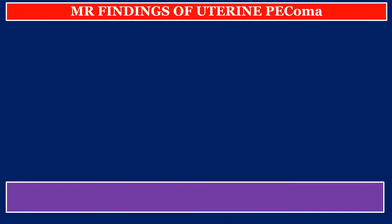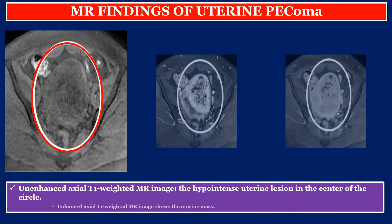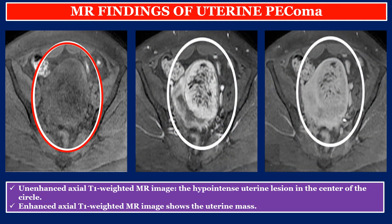MRI findings of uterine PEComa. This photo shows an enhanced axial T1-weighted MR image with a hypo-intense uterine lesion in the center of the circle. These two photos show enhanced axial T1-weighted MR images showing the uterine mass.